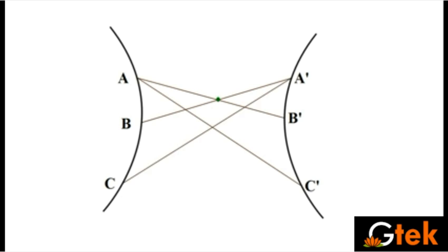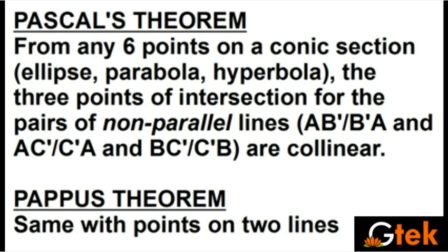For a hyperbola, using points A, B, C, A', B', C' and connecting lines AB' to BA', AC' to CA', and BC' to CB', the three intersection points are again collinear. This holds regardless of the hyperbola's size.